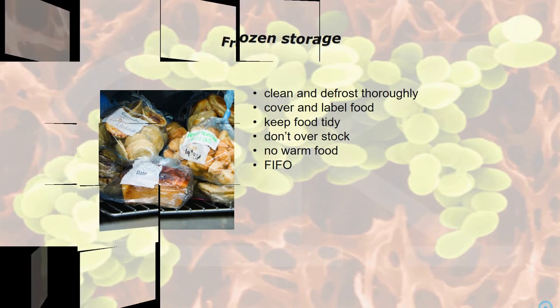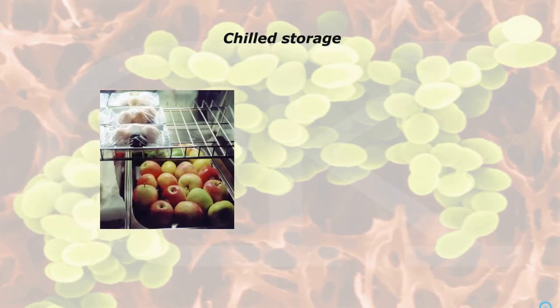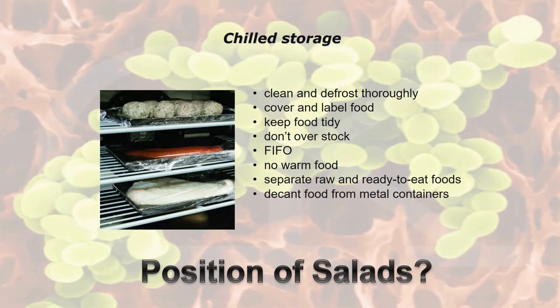For chilled storage, fridges should be at 1 to 4 degrees C. Again, always clean and defrost your fridges thoroughly, cover and label food, keep food tidy, don't overstock, use first in first out, don't put any warm food in, separate raw and ready-to-eat foods, and decant food from metal containers. If you open a large tin of beans or meat, transfer it to a food-safe container such as a Tupperware, as leaving it in the original metal container will cause metal contamination.